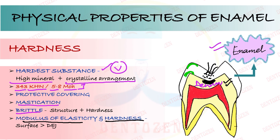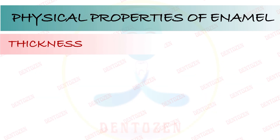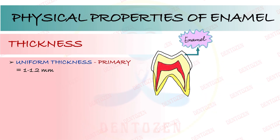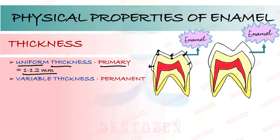Now let's talk about thickness. In primary teeth, the thickness is the same all over — it is uniform. How much is it? It is 1 to 1.2 millimeters. Now in permanent teeth, is it the same everywhere? No, it has variable thickness.